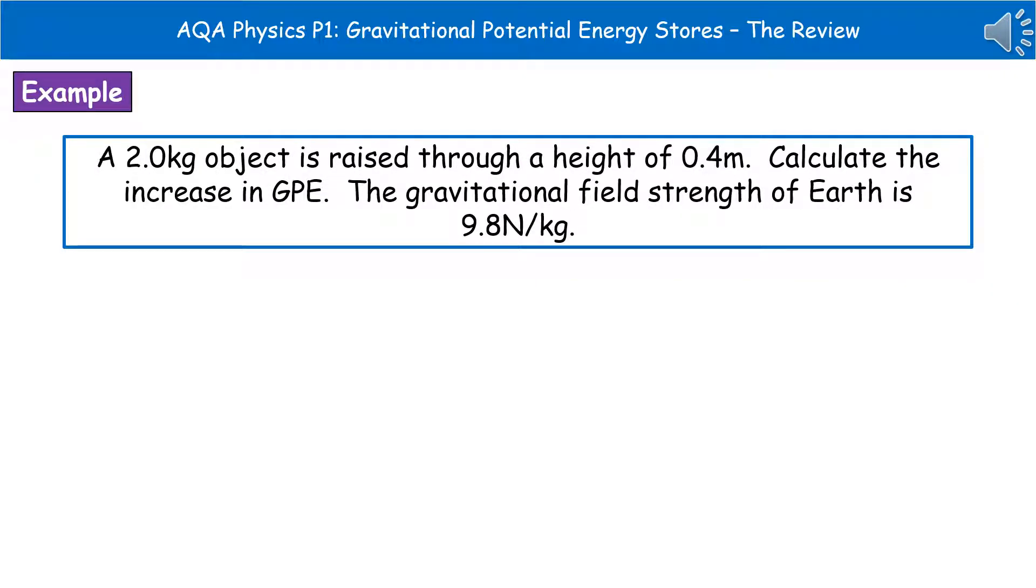An example of the kind of question we could see on this particular calculation: a 2 kilogram object is raised through a height of 0.4 meters. Calculate the increase in GPE. The gravitational field strength of Earth is 9.8 newtons per kilogram. As always with our calculation, as you read the question, circle, underline, or highlight the important bits of information so you don't have to reread it again.